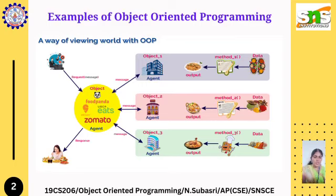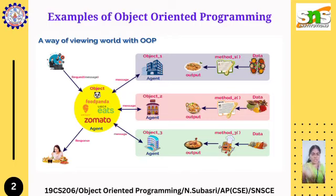While Simula is credited as being the first object oriented programming language, many other programming languages are being used with OOP concepts today. Some programming languages pair with OOP better than others. For example, programming languages considered pure OOP languages treat everything as objects. Popular pure OOP languages include Ruby, Scala, Jade, and Emerald.